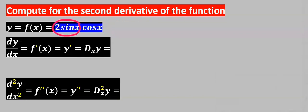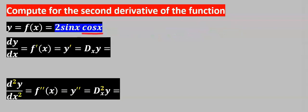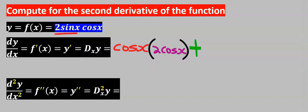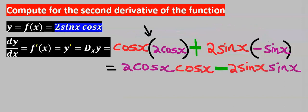Let's find the second derivative of this function. Observe that 2sin(x) is multiplying cos(x). For multiplying functions, you apply the product rule. I will keep cos(x) constant, differentiate 2sin(x) to get 2cos(x). For product functions we use a plus. Next, I will keep 2sin(x) constant and differentiate cos(x), which gives minus sin(x).